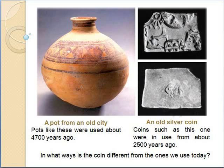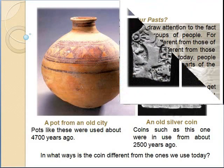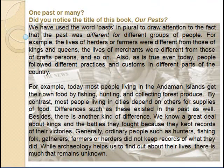Is diye ke chitra mein, praachin nagar se prapt ek patra — matki — nazar aa rahi hai. Is tarah ke pathron ka prayog 4700 varsh purva hota tha. Iske saath mein do chitra aur hain — yeh asli mein sikke hain. Is tarah ke sikkiyon ka prayog lagbhag 2500 varsh purva hota tha. Aaj jo hum use karte hain sikke, woh inse kuch alag hi hain.